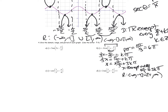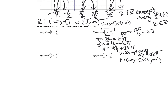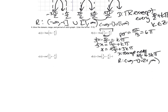Let's do problem D before C, since D is similar to B except we're doing secant. The period is two pi over three fourths, which is eight pi over three.